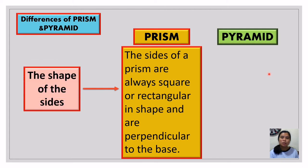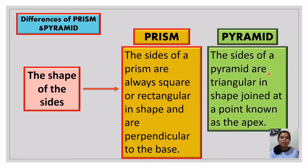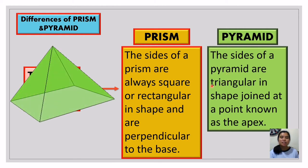How about the pyramid? The sides of a pyramid are triangular in shape, joined at a point known as the apex. Unlike a prism which is perpendicular to the base, the pyramid's sides meet at a single point — the apex. As you can see, the sides are triangular in shape and they meet at one point, called the apex. That is why it is called a pyramid.